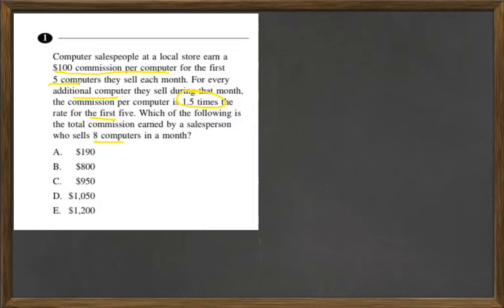So let's go ahead and start with the first five. Well, the first five computers, it's $100, so 5 times 100 equals $500.